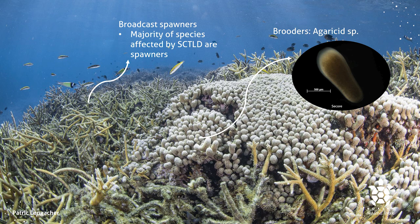The majority of species affected by SCTLD are what we call broadcast spawners — they release their gametes into the water, where they fertilize, become embryos, and then go through the whole cycle to become a planula and settle onto the reef. There are also brooders; an example affected by SCTLD would be the lettuce corals or Agaricia, which release a whole larva that settles onto the reef. Other species you may know, not affected by SCTLD, include Acropora, which are broadcast spawners, and Porites, which are brooders.